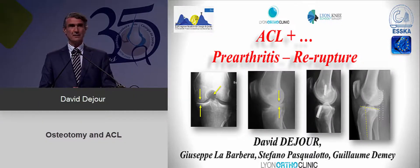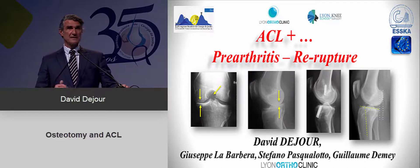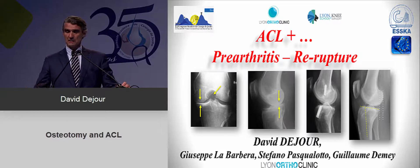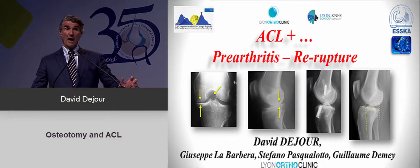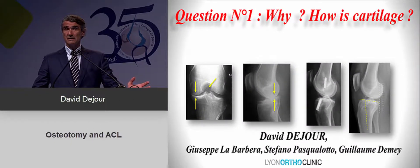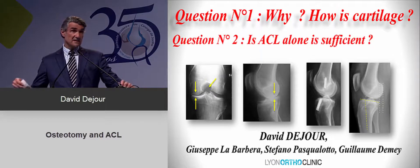I will speak English and try to show you what is ACL plus something. Sometimes when you have a chronic ACL or a medial meniscectomy — a long-term medial meniscectomy — you can have some cartilage damage. In case of re-rupture, you have to ask yourself some questions and maybe do more than just an ACL. The question is: why did you have a re-rupture, and is an ACL alone sufficient or should you do something else?